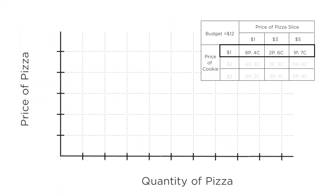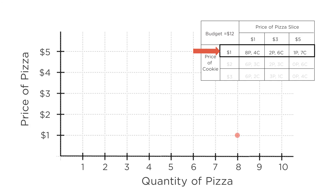So let's fix the price of cookies at $1 each, and for each price of pizza on the vertical axis, we plot your demand for pizza on the horizontal axis. When pizza is $1 a slice, you buy eight slices. But when the price rises to $3, you only buy two. When the price of a slice goes all the way to $5, you only buy one slice. If we assume you can buy fractions of a slice, you can go ahead and connect the dots. And there you have it — a demand curve is born.